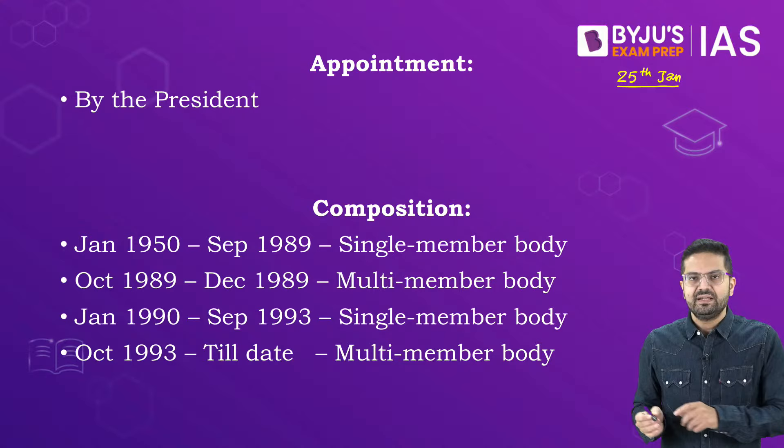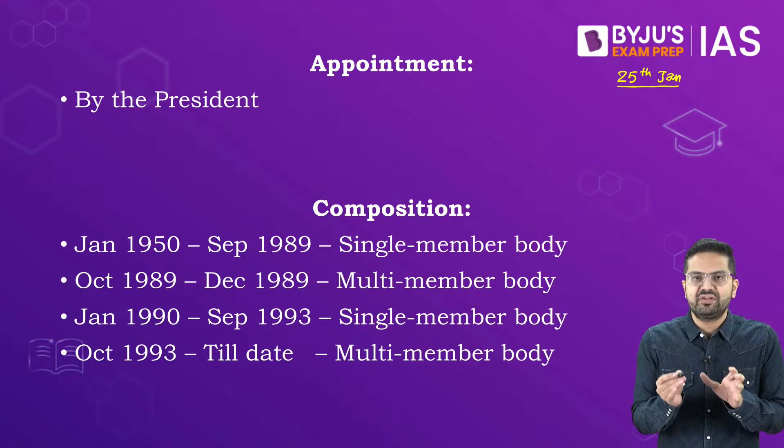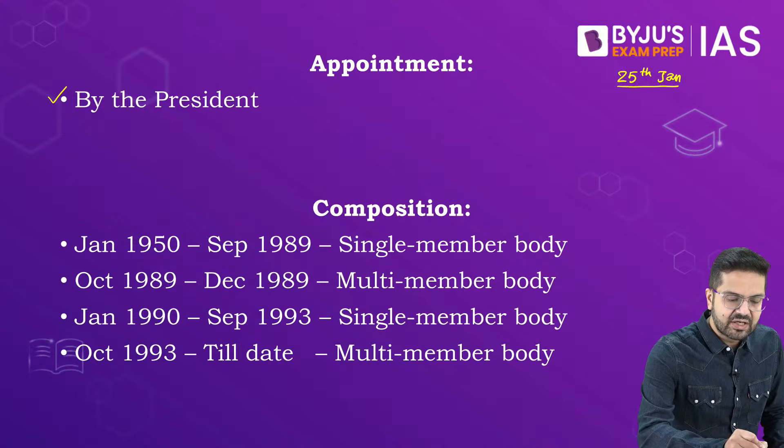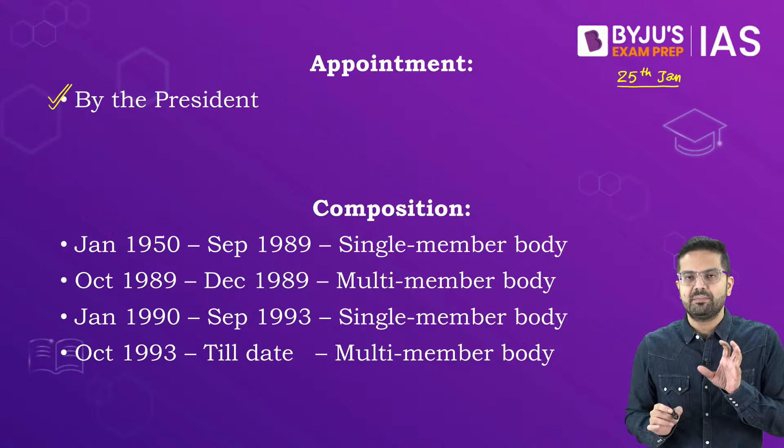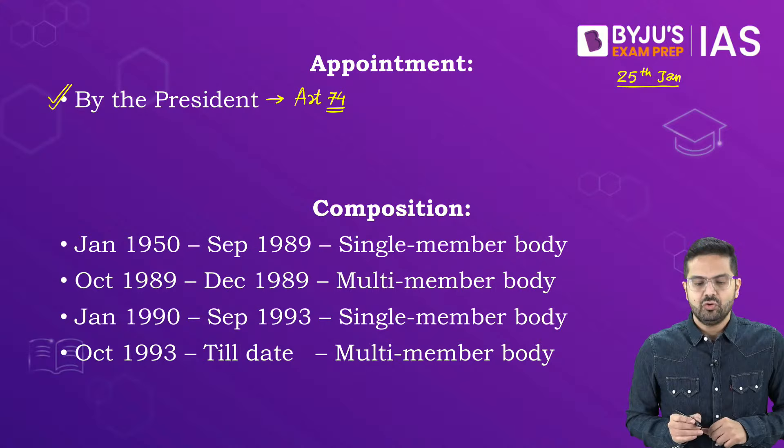The Election Commission of India is a multi-member body. The Constitution says we will have one Chief Election Commissioner and we can have such other number of election commissioners as the President of India may determine. The appointment of the election commissioners is done by the President, and when we say any person is appointed by the President it comes under Article 74, meaning on the binding aid and advice of the council of ministers.